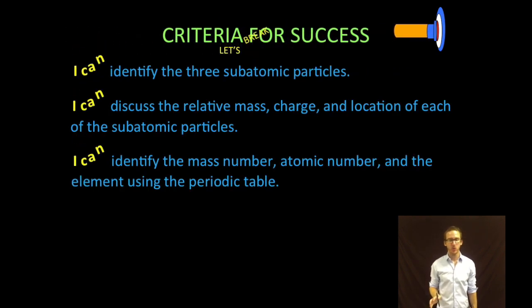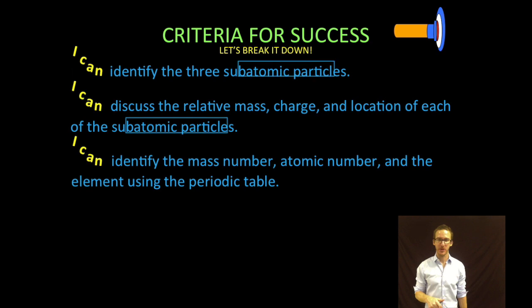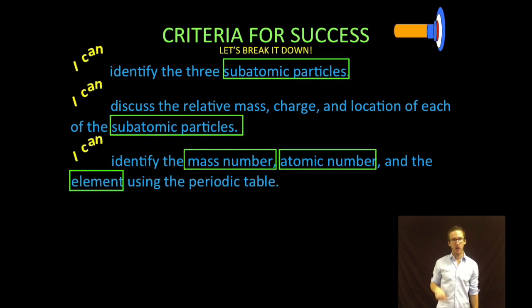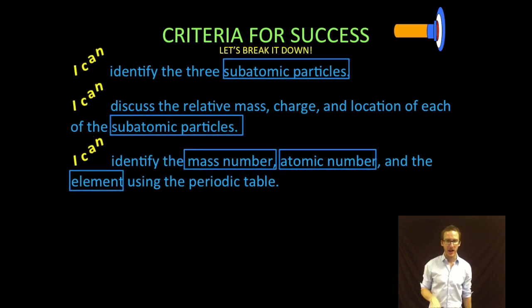Breaking it down a little bit, we are going to one, identify the three subatomic particles; two, discuss the relative mass, charge, and location of each of the subatomic particles; and number three, identify the mass number, atomic number, and the element using the periodic table.